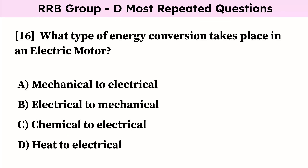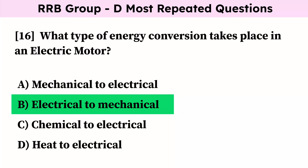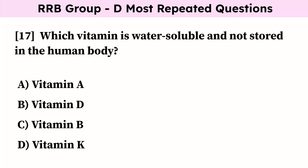What type of energy conversion takes place in an electric motor? Correct answer is electrical to mechanical. Which vitamin is water-soluble and not stored in the human body? Correct answer is vitamin B.